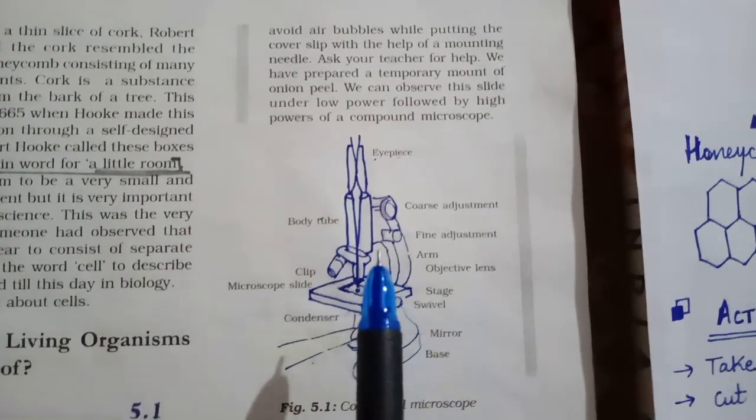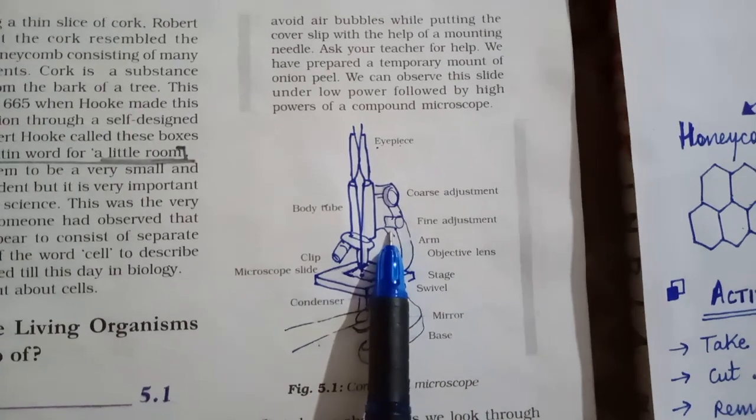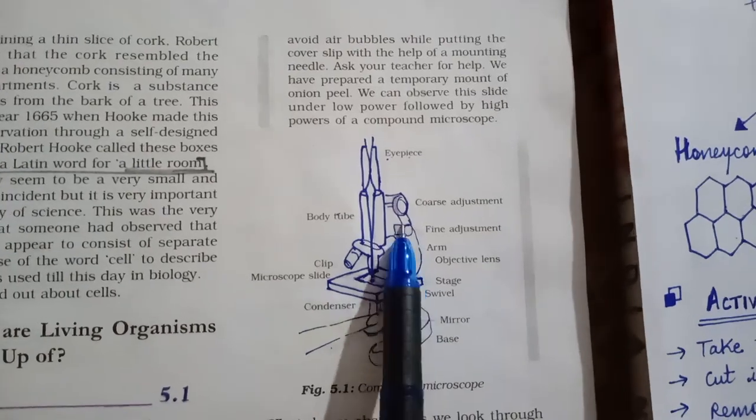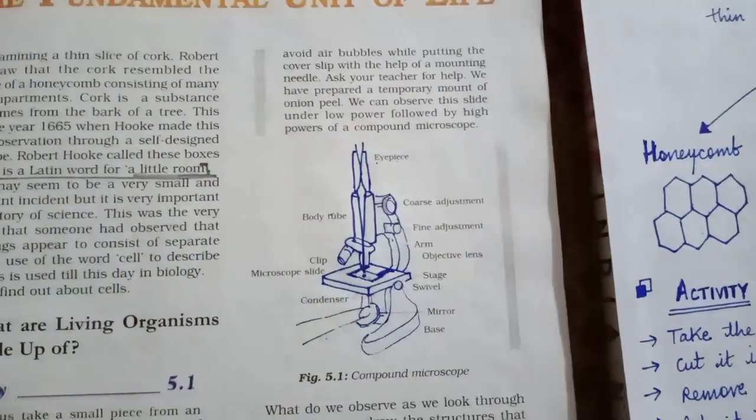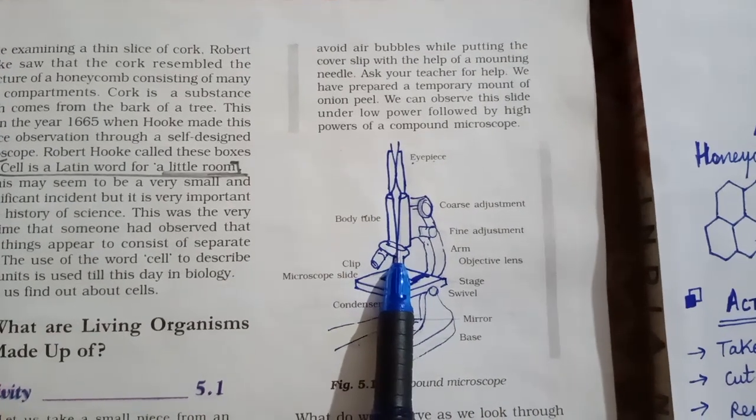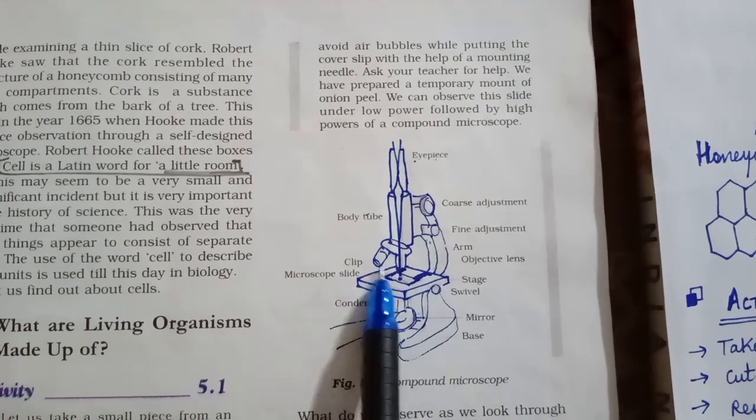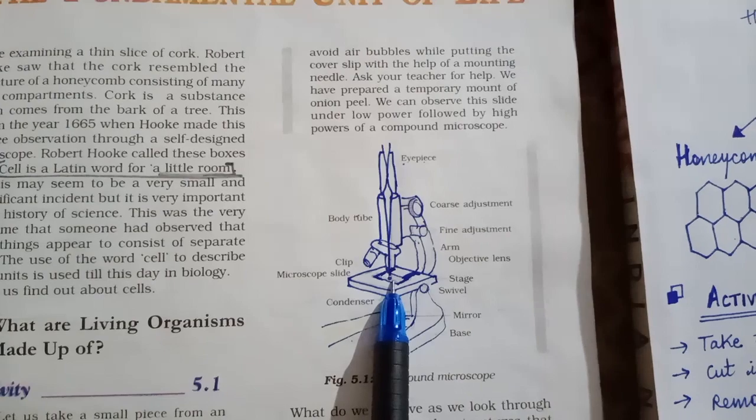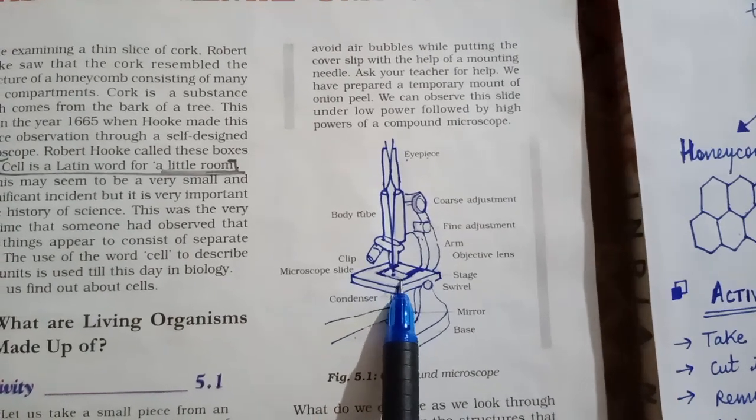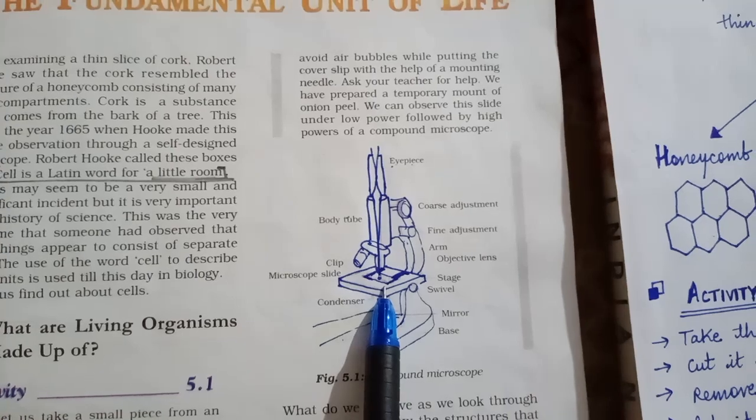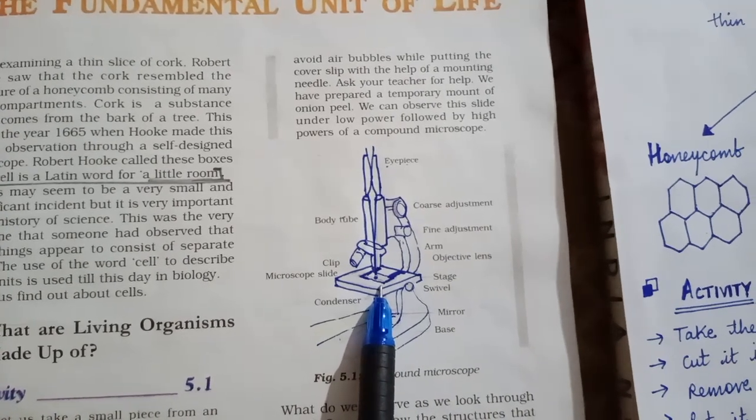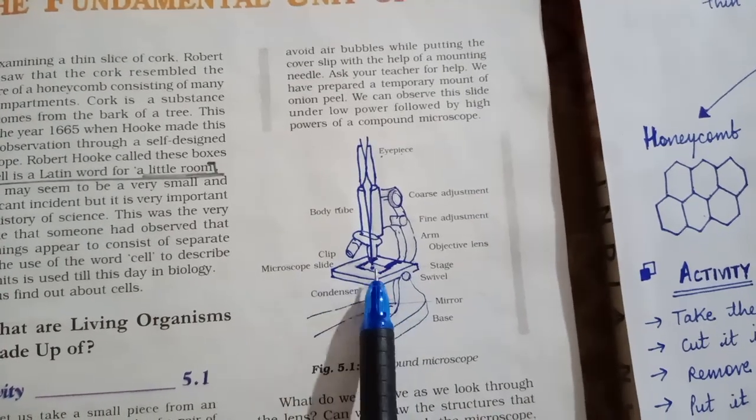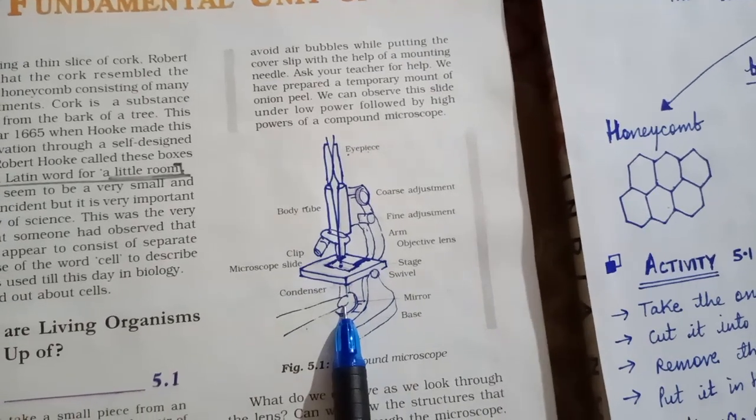Then there are two types of adjustments: coarse adjustment and fine adjustment. This is arm to hold the microscope. This is body tube. And there are objective lens. Objective lens, that is near object. Object yaha par hamare specimen slide rakhi jati hai for the observation. When we are observing a slide or any temporary or permanent slide, this is the stage jaha par slide ko rakha jata hai.